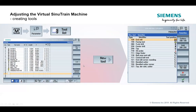Once you've done that, you really have a SinuTrain you can start doing something with. The only other thing that might be left is creating or building tools. When you go to run a part program, you'll need to build some basic tools. We'll talk about that as we get into programming examples — just the very basics of building tools. When working out posts, we don't need complicated tooling; we're just going to build an end mill, a drill, and things like that.